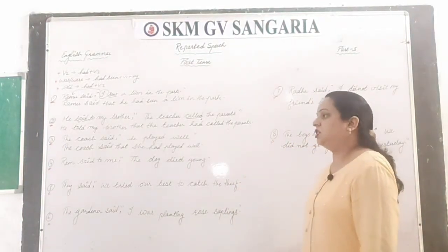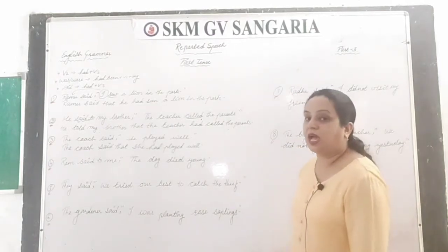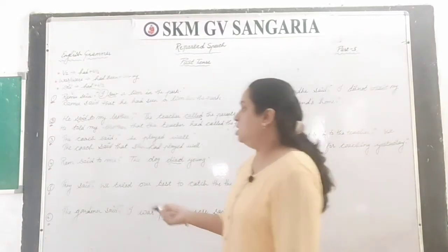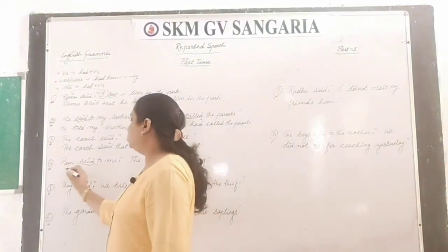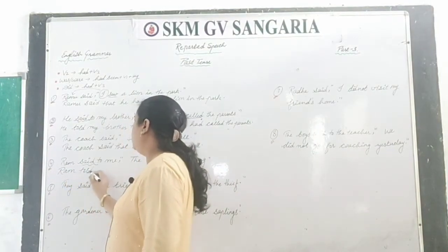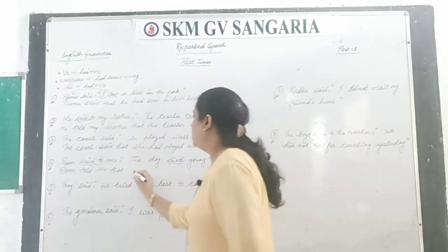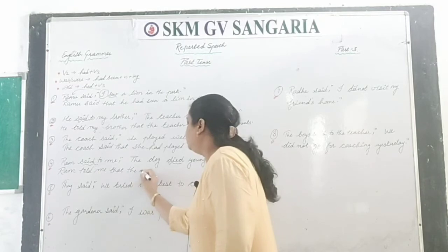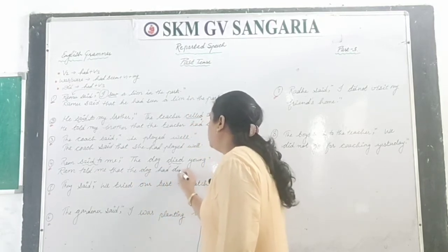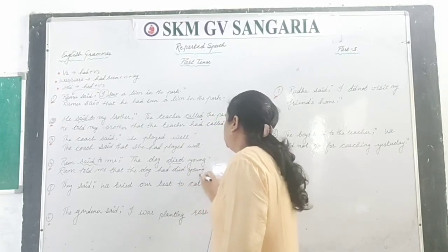Ram said to me, 'The dog died young.' Here it is past tense. 'Said to' changes into 'told'. 'Died' — third form is also 'died', so we add 'had'. Answer: Ram told me that the dog had died young.